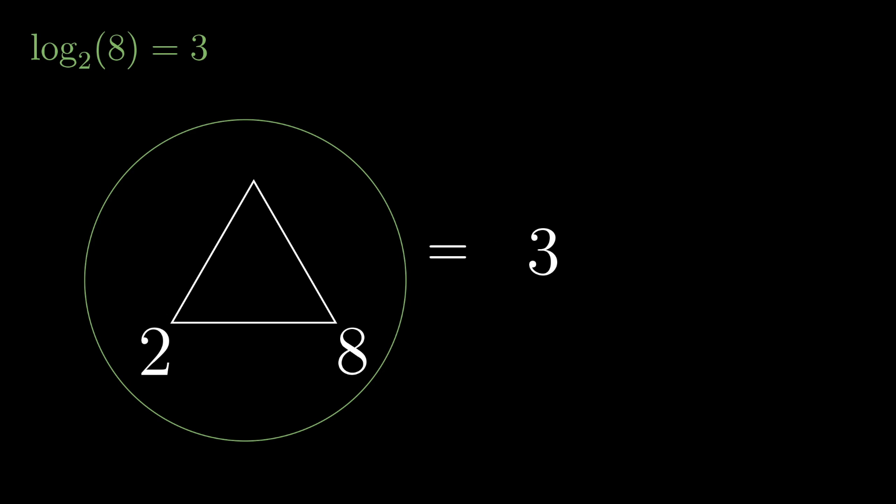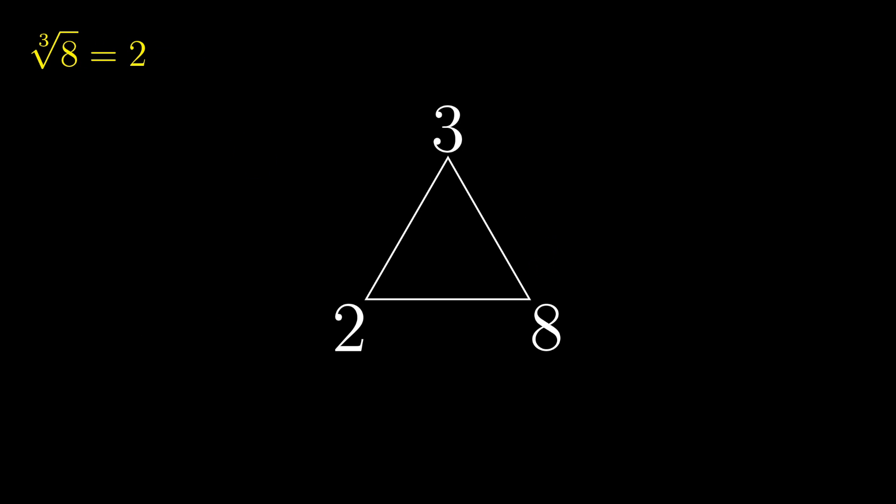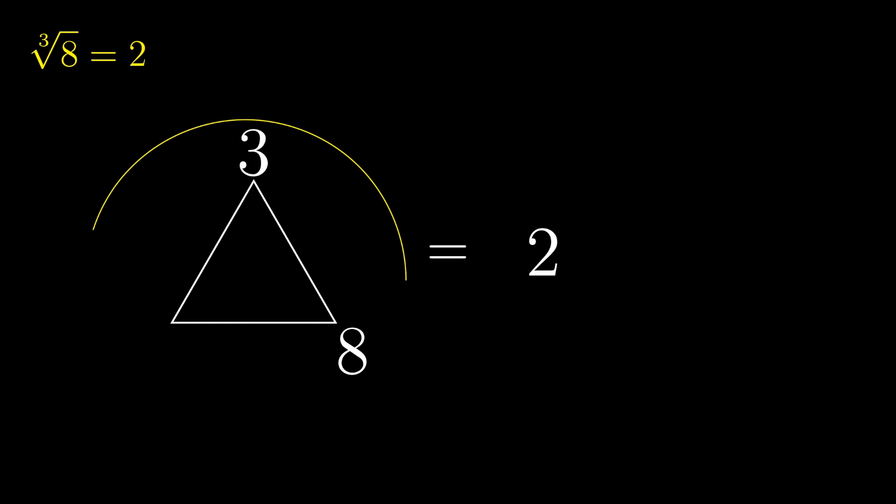For a relationship like two cubed equals eight, take a triangle and write two in the lower left, three on the top, and eight on the lower right. To express the operation two cubed, remove that bottom right corner. The symbol as a whole represents the value that should go in the missing corner. To express log base two of eight, which is asking the question two to the what equals eight, remove the top number. The symbol as a whole represents the value that should go in the missing corner. To express the cube root of eight, which is saying what number to the third power equals eight, remove the bottom left corner. The symbol as a whole represents the value that should go in the missing corner.